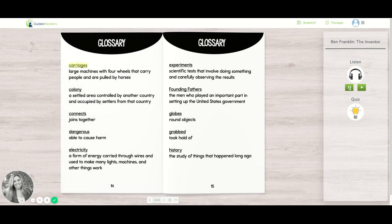Glossary. Carriages: Large machines with four wheels that carry people and are pulled by horses. Colony: A settled area controlled by another country and occupied by settlers from that country. Connects: Joints together. Dangerous: Able to cause harm.